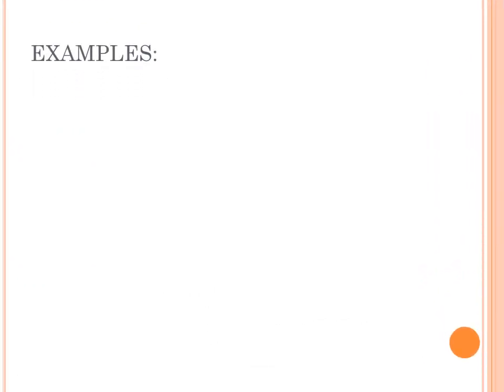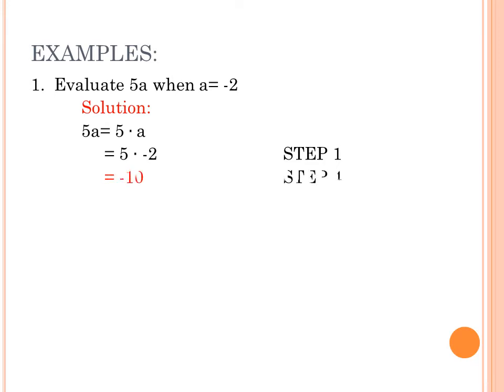Example number 1: Evaluate 5a when a is equal to negative 2. Solution: 5a is equal to 5 times a. Substitute the value of a which is negative 2. We have 5 times negative 2, which is step 1. And 5 times negative 2 is equal to negative 10. Negative 10 is the final answer.